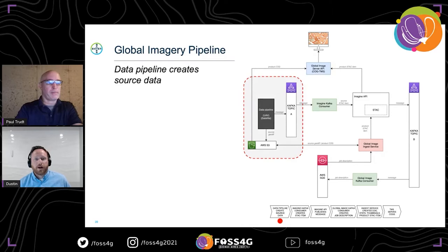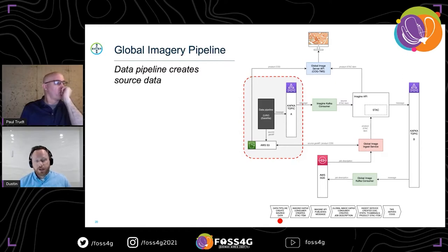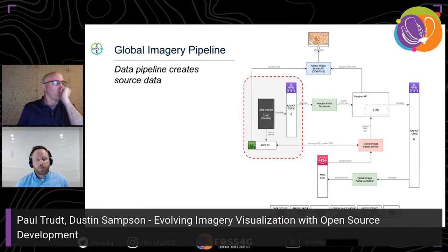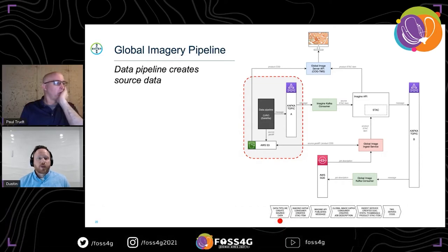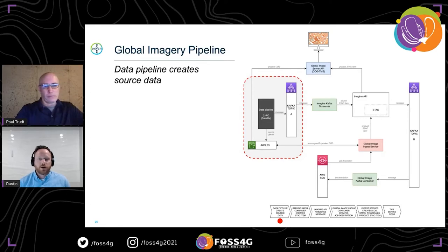Starting at stage one, the global imagery pipeline is fed images from existing data pipelines, represented by a black box in the diagram. These data pipelines can vary in shape and size — some fetch images from third-party sources, may be removing clouds from images or stitching drone imagery together. Two common tasks each pipeline performs: they store the output images into an S3 bucket, and also publish a new image message so that other systems are aware a new image is available.